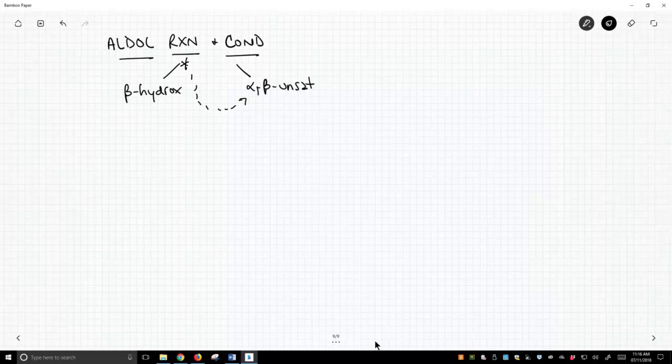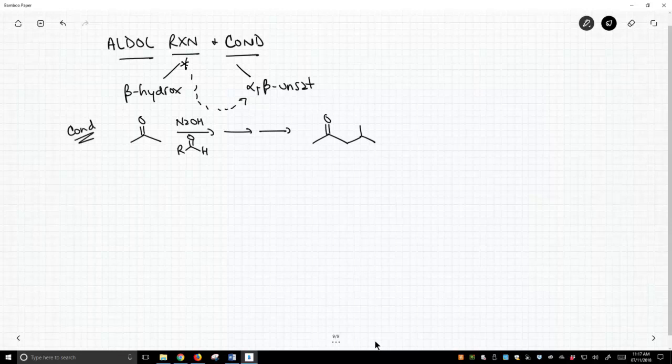You do this by adding another step. But if you look at the aldol condensation, what we do is throw everything in: our base, sodium hydroxide, sodium alkoxide, some aldehyde. And as we go through all these steps in the condensation, we do get to the beta-hydroxy ketone.